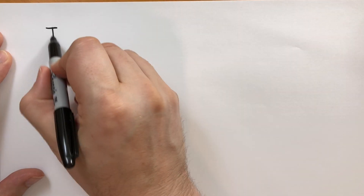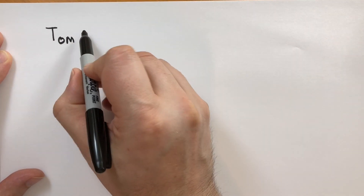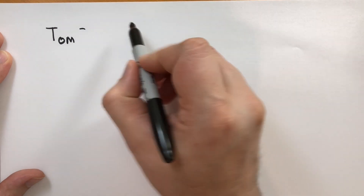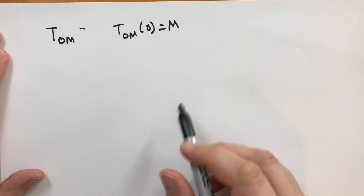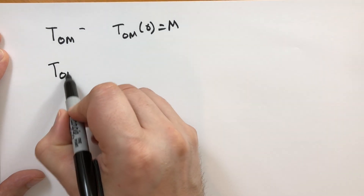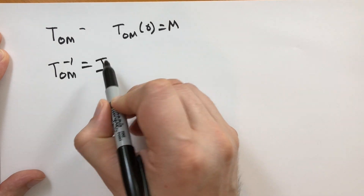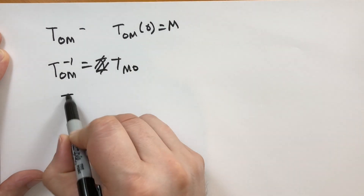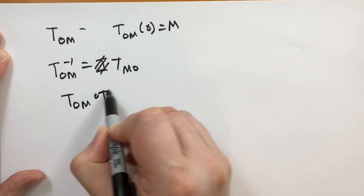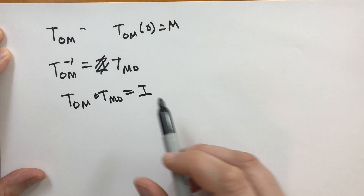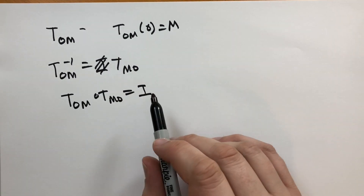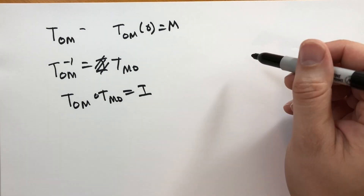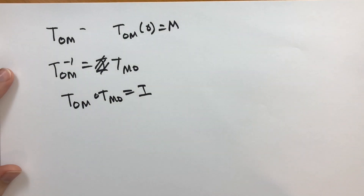What about translations? If T_OM is the translation such that T_OM of O gives M, then the inverse of T_OM would be T_MO, because T_OM composed with T_MO is the identity. So the inverse of a translation is the translation from the destination back to the origin.